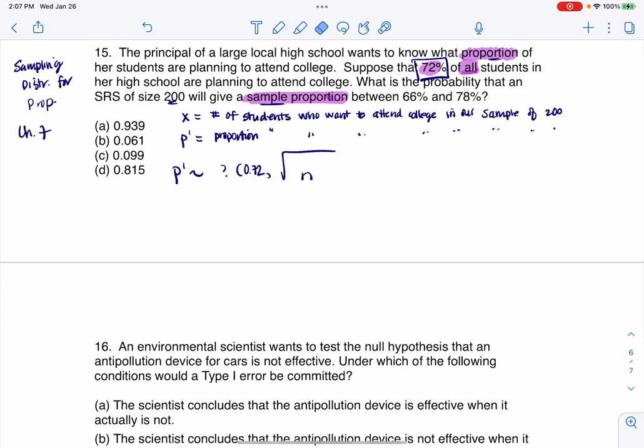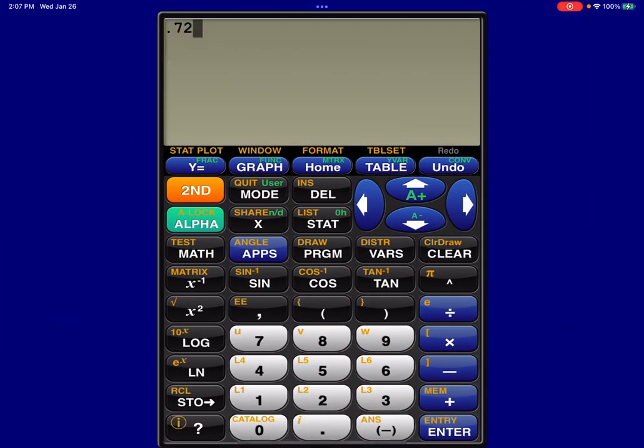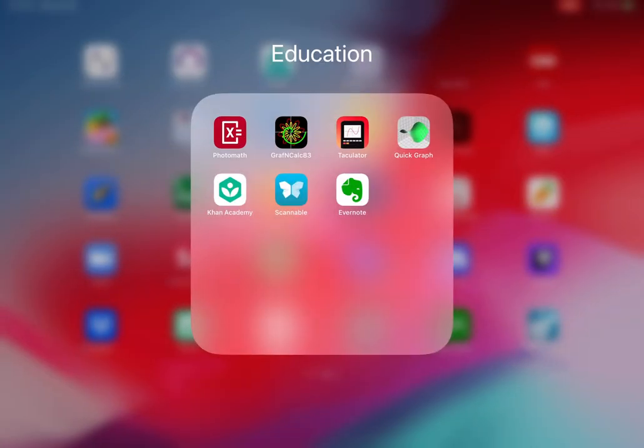Let me go swap that out with our numbers for our problem. This is going to be 0.72 times 1 minus 0.72 over 200. Let me go see what that number is. I'm going to head to my calculator app. 0.72 times 1 minus 0.72, divide that by 200, and then take the square root of that answer. So it looks like I have about a 3.2% margin of error. I'm going to write 0.032 here.